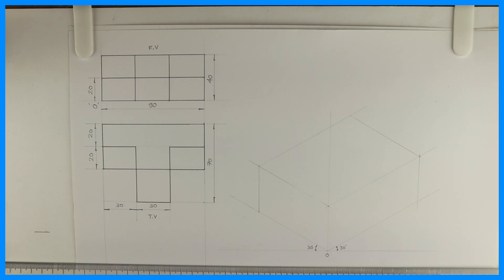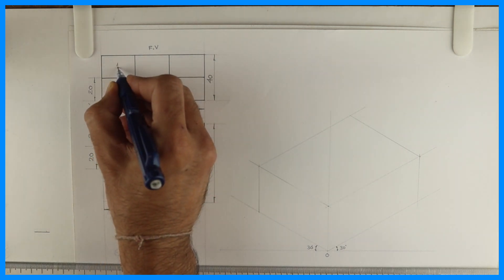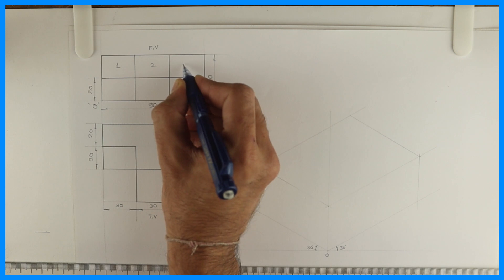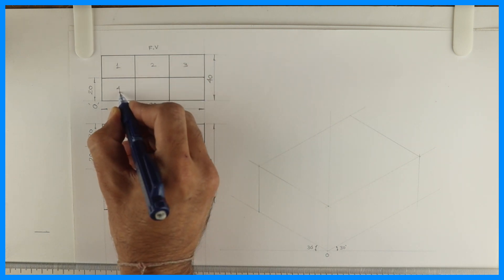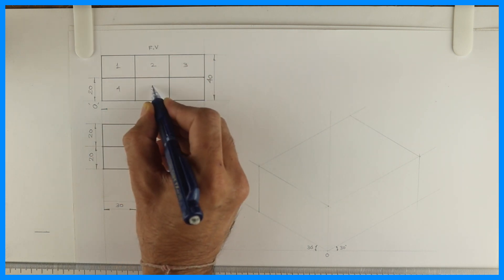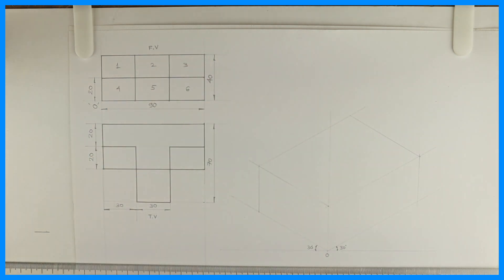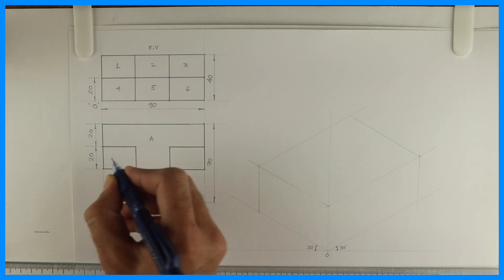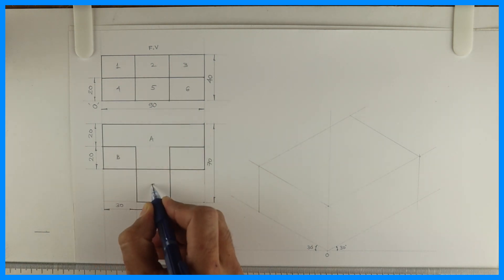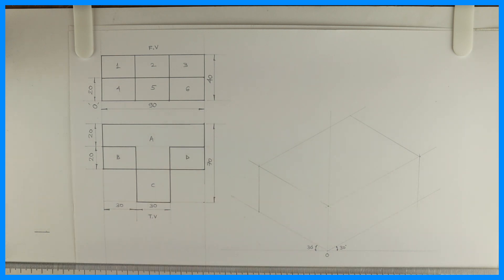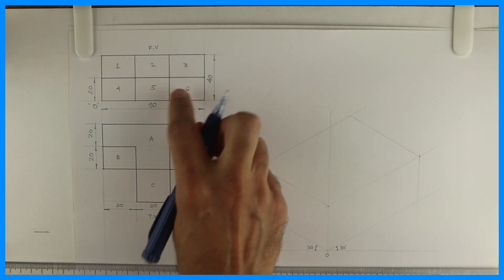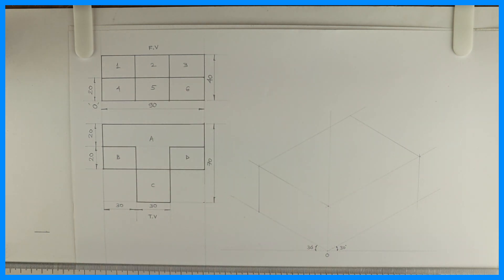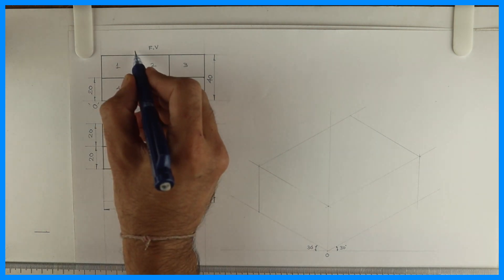First we will draw a block. In the front view there are 6 parts: 1, 2, 3, 4, 5, 6. And in the top view there are 4 parts: A, B, C, D. So it is better to start with the top view. In the front view there is a T concept.